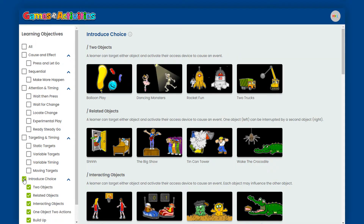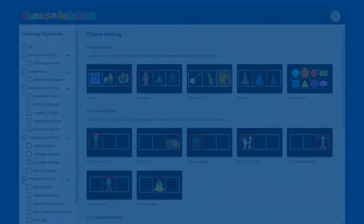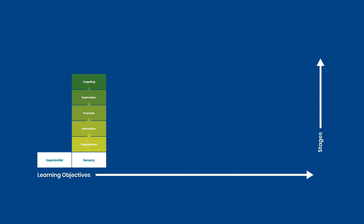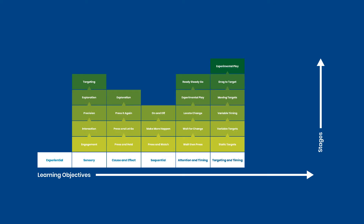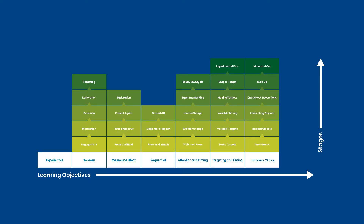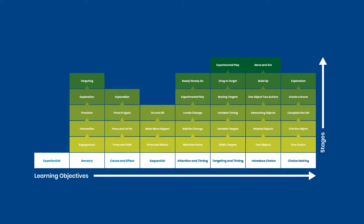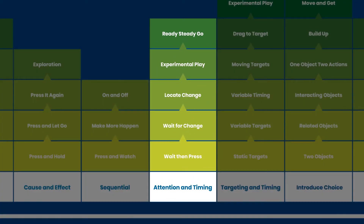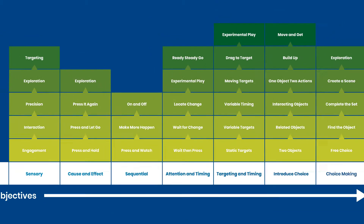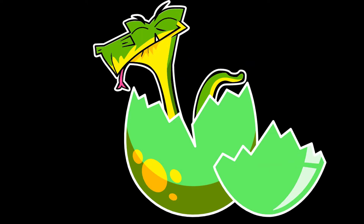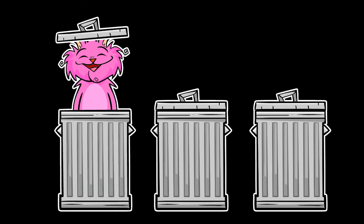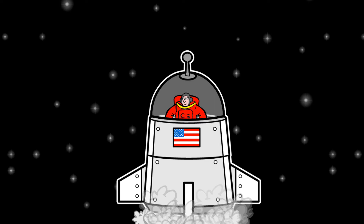Learning objectives are split into key milestones representing targets in a series of small, achievable steps. For example, Attention and Timing helps develop skills such as focused timing, impulsiveness moderation, and improving attention and concentration. These activities are ideal for learners who have already gained an understanding of cause and effect and are learning to activate their access device at the right time.